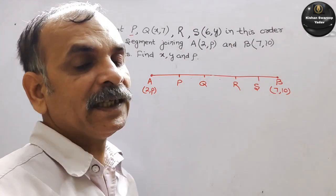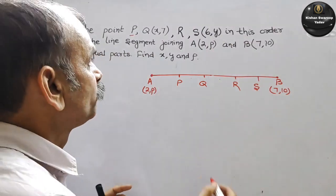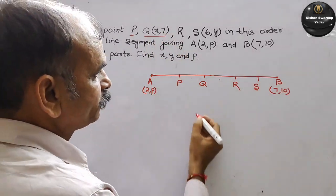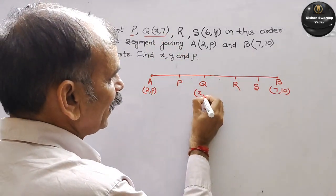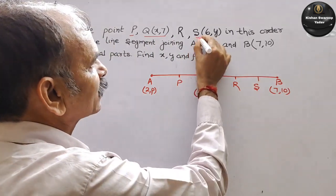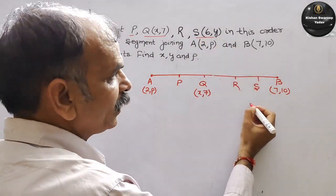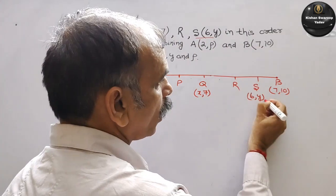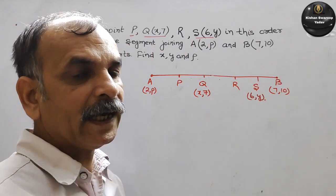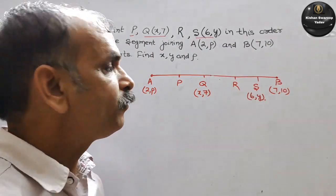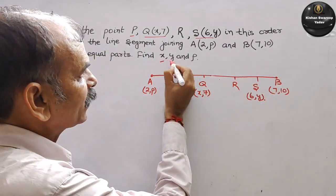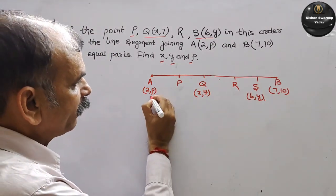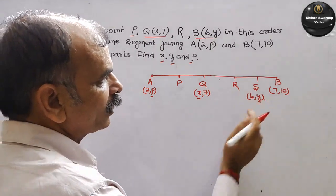Iske andar kuch coordinates diye hue hain. Q ka coordinate is (x, 7), aur S ka diya hai (6, y). Values kaun kaun se nikaalne hain — value aapko nikalana hai X, Y, aur P, yaani ki X ki value aur Y ki value.